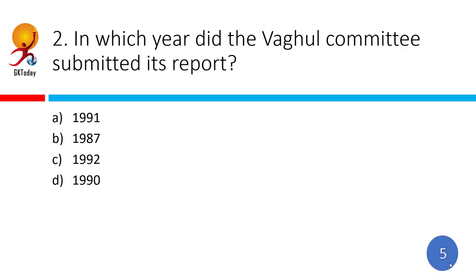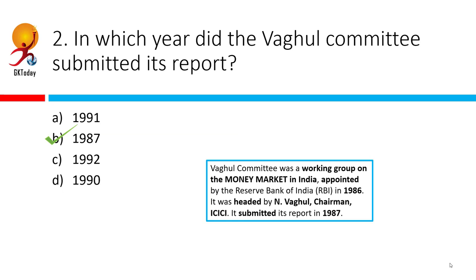In which year did the Wagul Committee submit its report? The correct answer is 1987. The Wagul Committee was formed in 1986 and appointed by the Reserve Bank of India. It was headed by N. Wagul as chairman, who was at that time the chairman of ICICI, and it submitted its report in 1987. The Wagul Committee suggested that the call money market should be purely an inter-bank market, and therefore the restrictions on entry into the call market prevailing at that time should continue.